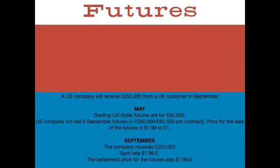So how does this all work out? Well, by the time September comes, they will have made a gain, because they agreed at £1.98, whereas the exchange rate actually fell to £1.96, so they've made a £5,000 gain on the futures.